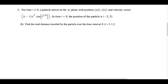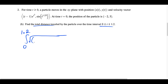For part B, we just need to know the formula for finding total distance traveled by a particle in a parametric equation. We take the integral from 0 to 1.2 — the time interval as our limits of integration — of the square root of the velocity in x squared plus the velocity in y squared, dt. This is the integral of the speed function.